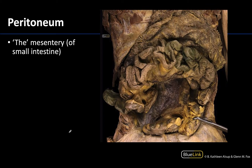Now let's get our bearings with this image. The omental apron has been reflected superiorly in order to better view portions of the jejunum and the ileum. Additionally, the jejunum and ileum have been moved a little superiorly as well in order to best view the root of the mesentery. When I say the mesentery, I mean the mesentery of the small intestine — oftentimes it is just referred to as the mesentery. The root right here is what's actually attaching to the posterior abdominal wall.